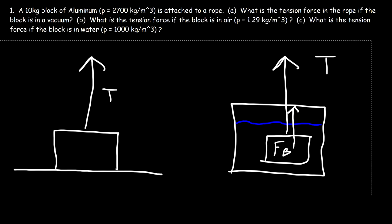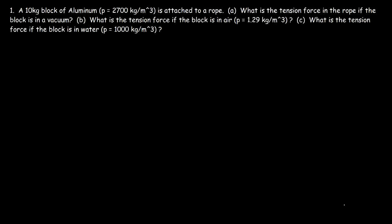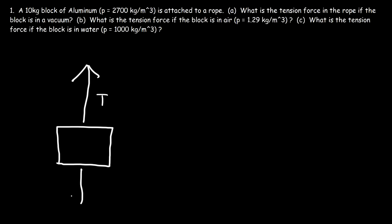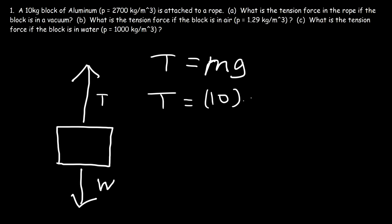So let's focus on this example. We have a 10-kilogram block of aluminum attached to a rope. What is the tension force in the rope if the block is in a vacuum? We have an upward tension force lifting the block and a downward weight force. In a vacuum, there is no upward buoyant force because there are no air molecules. So the tension force represents the true weight of the block: T = mg = 10 × 9.8 = 98 newtons.